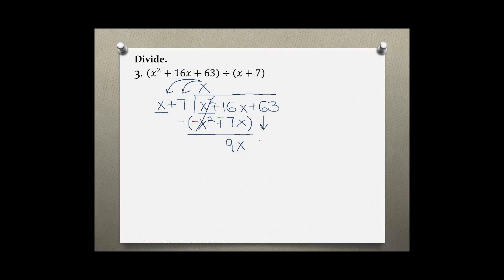Bring down your next term plus 63 and ask yourself by what do you have to multiply x to get 9x. By 9, because 9 times x gives us 9x and 9 times 7 gives us 63.